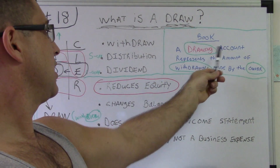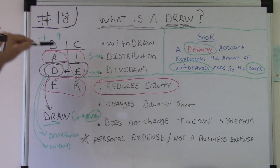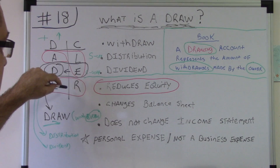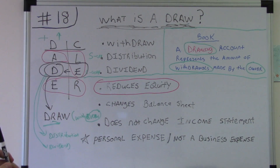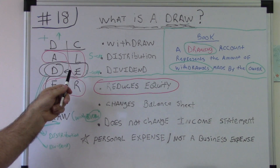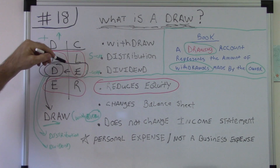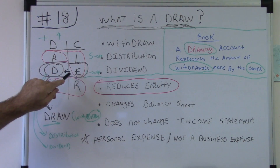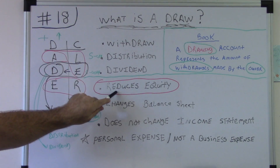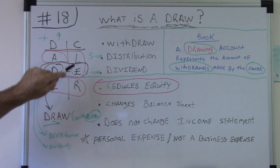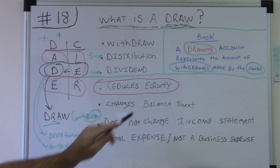A drawing account represents the amount of withdrawals made by the owner. As you can see in DC ALER, it changes the balance sheet. The balance sheet is assets equals liabilities plus equity. If the draw account reduces equity, and equity is part of the balance sheet, then you're going to have a change in the balance sheet.